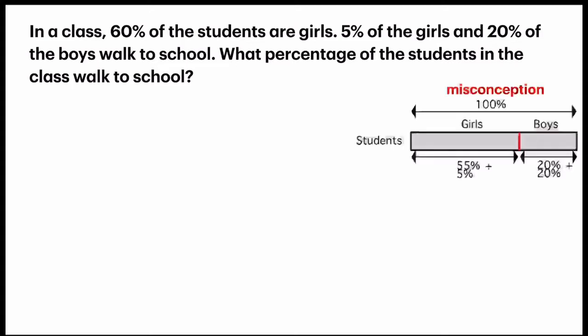One misconception is that students would just add 5% and 20% together to get the percentage of students in the class who walk to school. They would simply add it and get 25% and take it as the final answer.